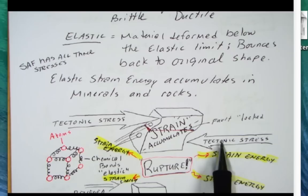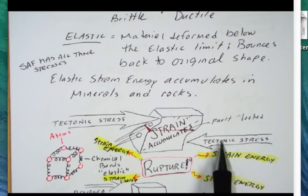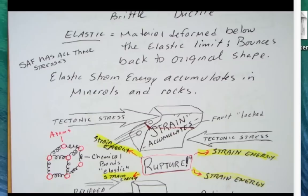In this example, I see tectonic stress forcing this part of the rock to the right, whereas this stress is forcing it to the left. We accumulate that strain and eventually the rock just will rupture.